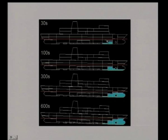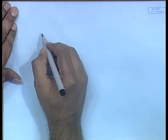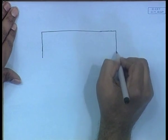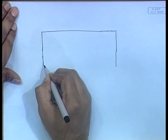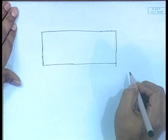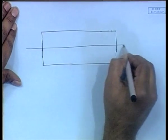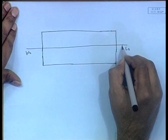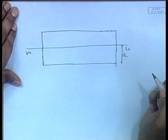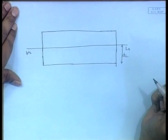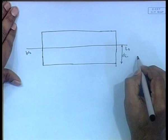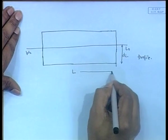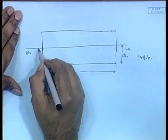Let us consider a box-shaped vessel floating at a waterline W0L0 at an initial draft d_i. This is the elevation or profile view. The length of the ship is capital L and this is the draft. Now let us consider that a small region gets flooded in the center.